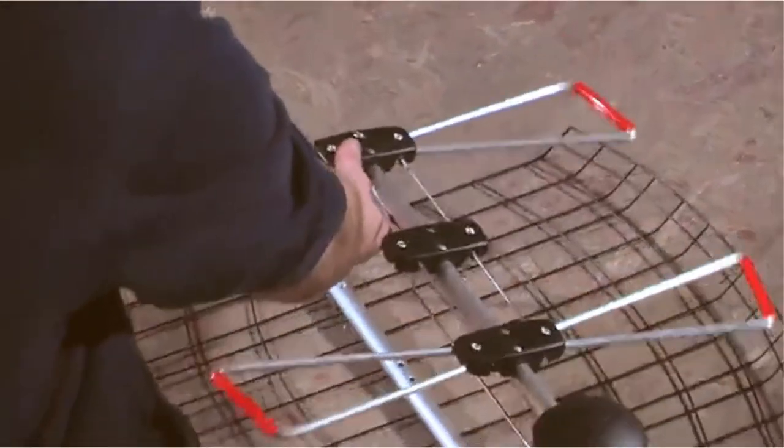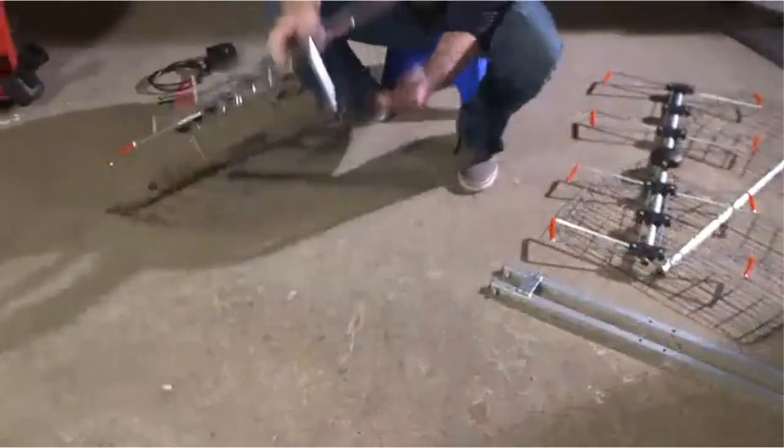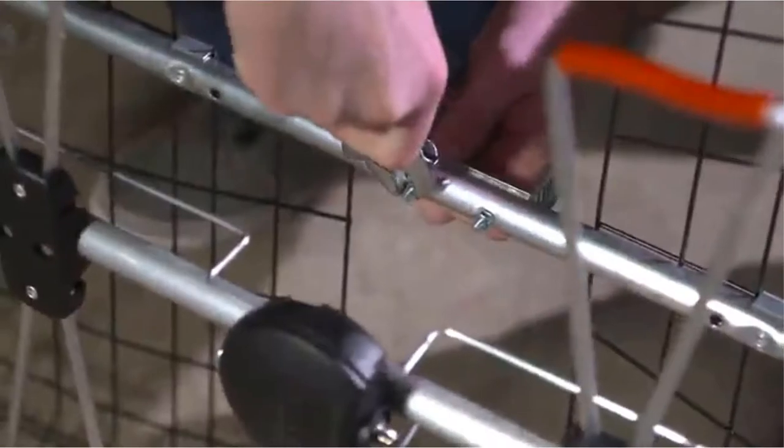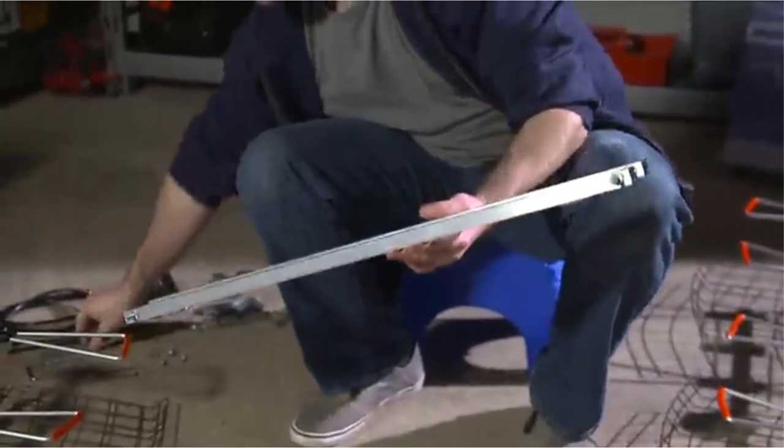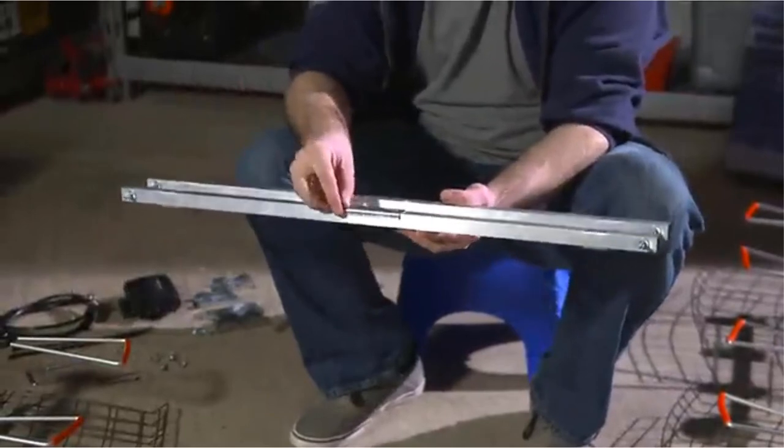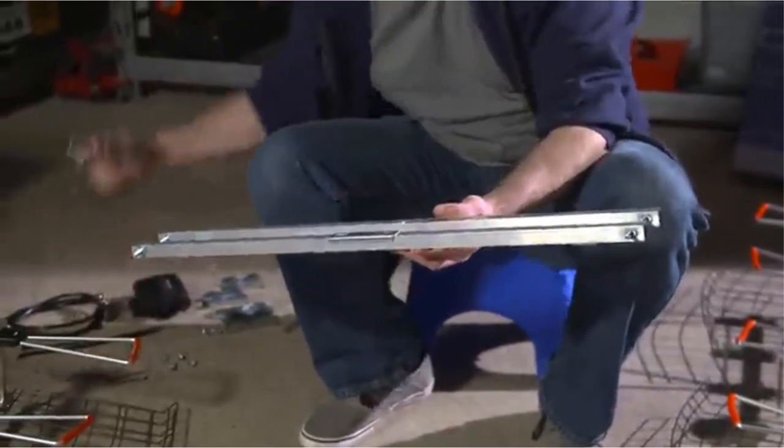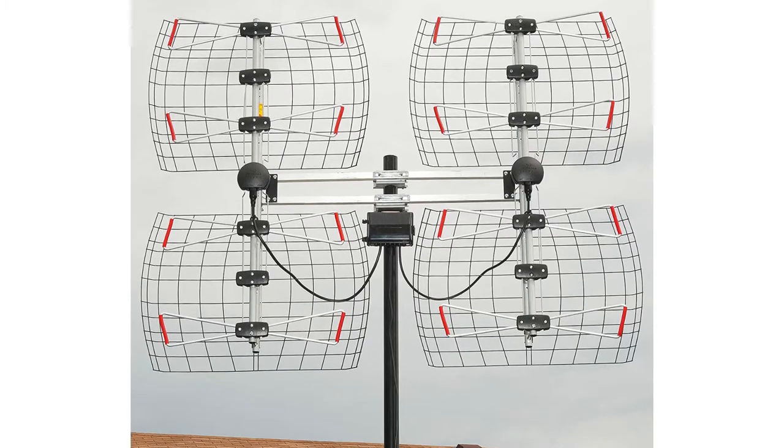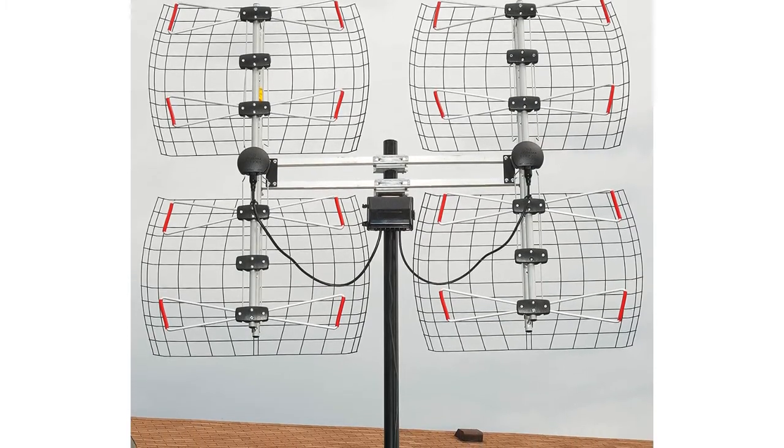So what if you want to receive some channels like PBS? No problem. Antennas Direct actually includes a separate dipole element that you add to the top of the antenna, enabling it to pull UHF and VHF signals. A very high frequency dipole kit is included with the antenna.